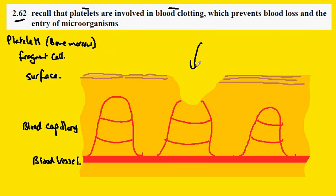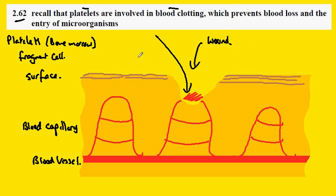When we have a wound like this, the exposure of the platelet to air causes the blood to bleed into this zone here. What's going on here is that the platelets release chemicals in this zone.